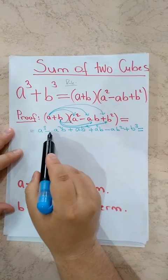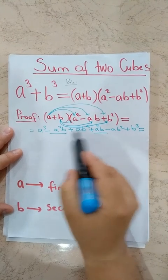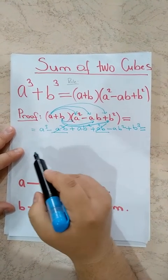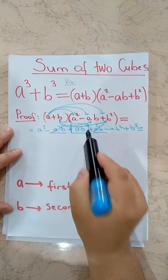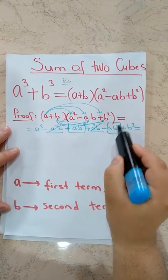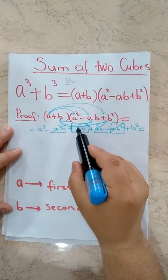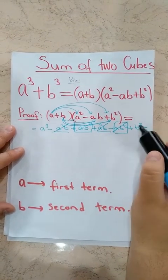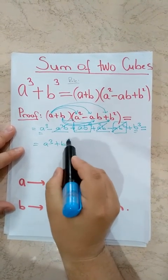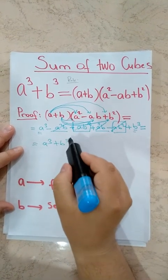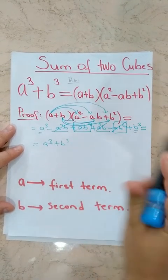And last, B times B squared gives B cubed. Now look: negative A squared B and plus A squared B are like terms and cancel. And plus AB squared and minus AB squared are also like terms and cancel. So we get just A cubed plus B cubed — the first term cubed plus second term cubed. We have proved this expression by multiplying.